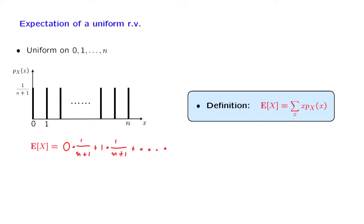So we obtain a summation of this form. We can factor out a factor of 1 over n plus 1, and we are left with 0 plus 1 plus all the way up to n. And perhaps you remember the formula for summing those numbers, and it is n times n plus 1 over 2. And after doing the cancellations, we obtain a final answer, which is n over 2.